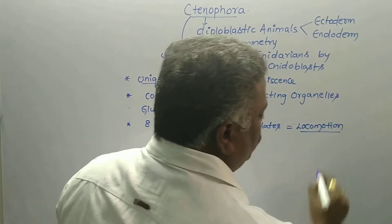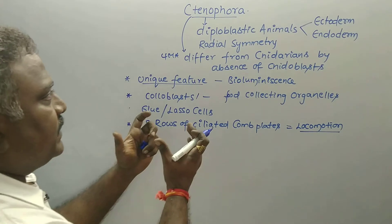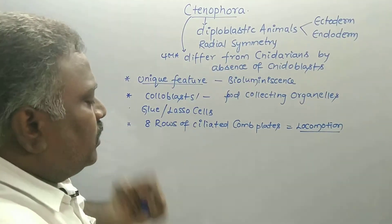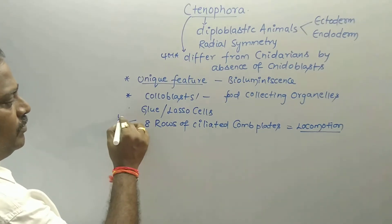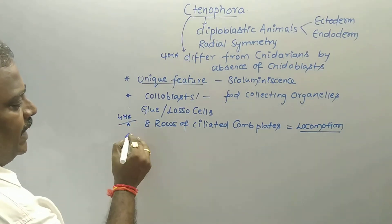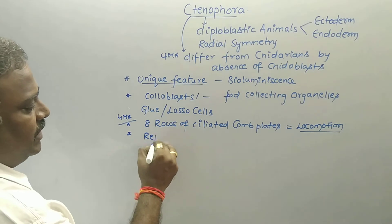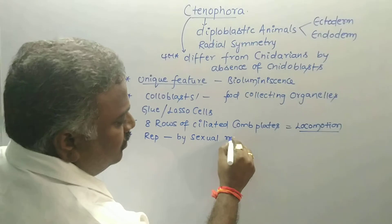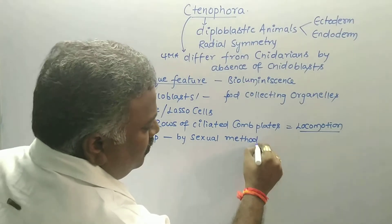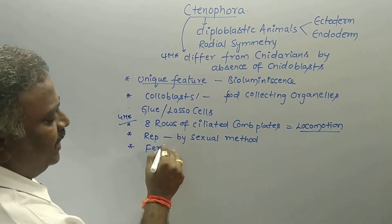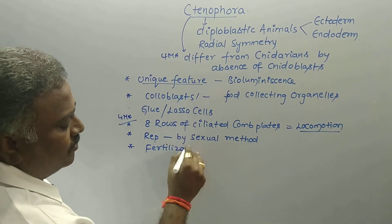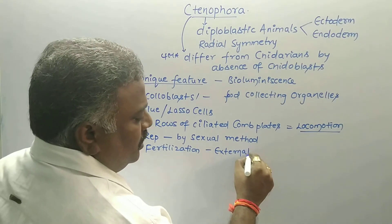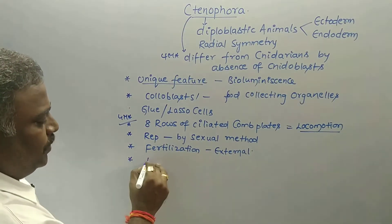If asked about the locomotory structures of Ctenophora, the answer is comb plates — that's an important point. Reproduction is by the bisexual method, and fertilization is said to be external.